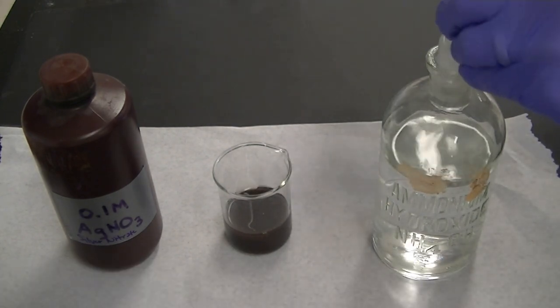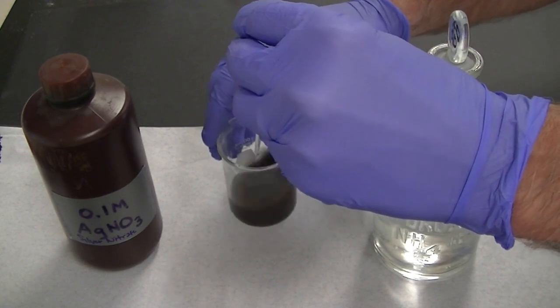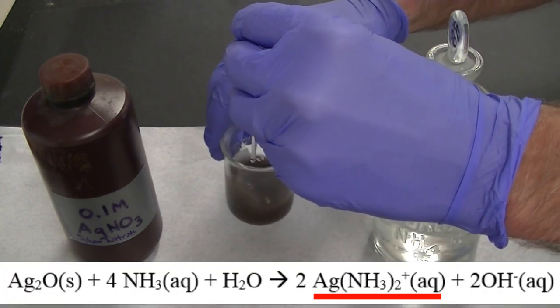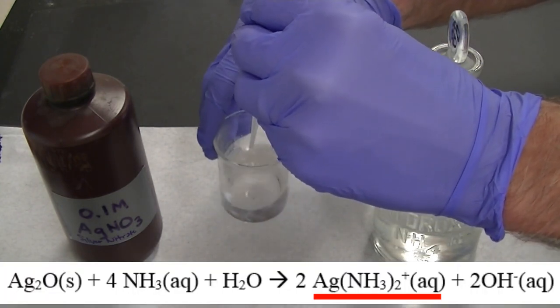Next, I added some concentrated ammonia. This caused the silver oxide to form a silver ammonia complex, which dissolves.